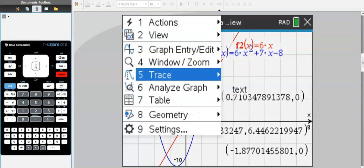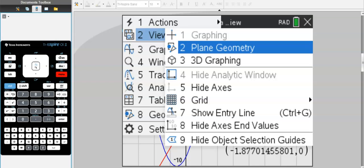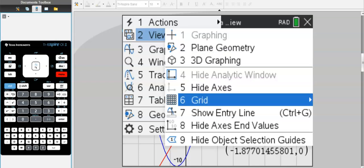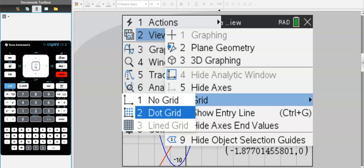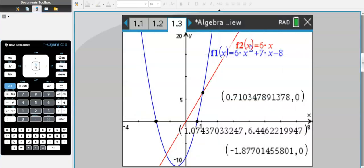Now if I don't like these grid marks, or if I want to add grid marks if your calculator doesn't have them, simply go to view, grid, and then change. Let's say I want no grid. The grid disappears.